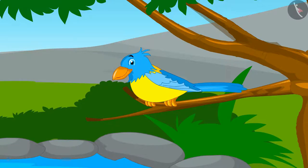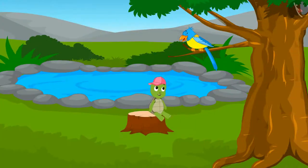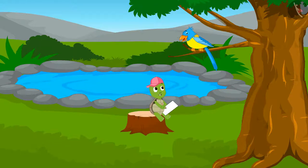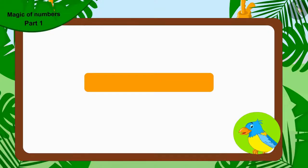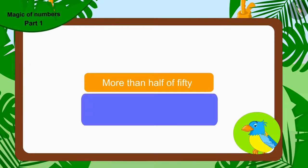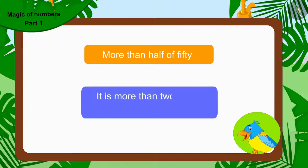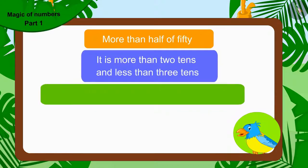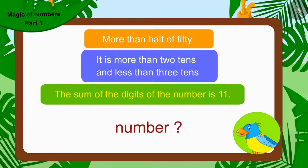'Are you ready?' the bird said to Tufan. Tufan immediately took a pen and paper saying 'I'm all set.' The number I have thought of is more than half of fifty. It is more than two tens and less than three tens. The sum of the digits of the number is eleven. Now tell me which number am I thinking of?